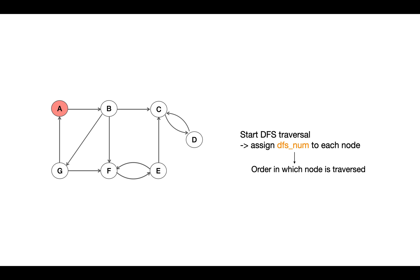Let's say we start from A, assign DFS_num as 0, then go down. It has child node B, assign 1 to it.